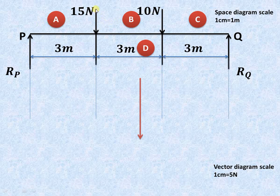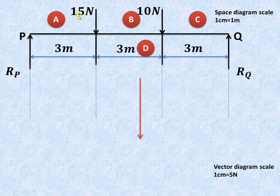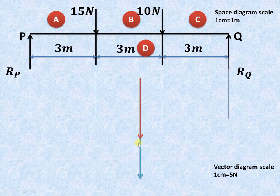The force AB is acting in the downward direction and it is 15 Newton. The vector diagram scale is assumed as 1 centimeter equal to 5 Newton. So 15 divided by 5 gives 3 centimeters representing AB, which is the 15 Newton force. Further, we have the 10 Newton force also acting downward, so we draw another vector downward. Total length will be 3 plus 2, that is 5 centimeters, representing the 15 Newton and 10 Newton forces respectively.